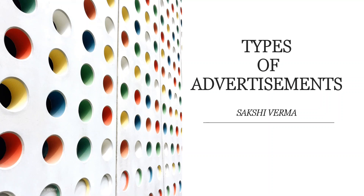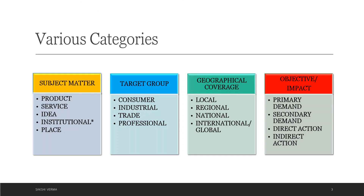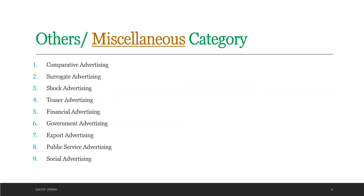Welcome all. I hope you are keeping healthy and safe. We studied in the last class different types of advertisements and we continue the topic today. In the last class we studied four segments: different types of ads according to subject, according to target group, geographical coverage, and your objective in advertisement. Today we are going to study various different types of advertisement which you can find at different places, and these concepts can come as different topics in your exams.